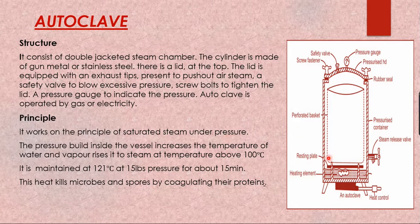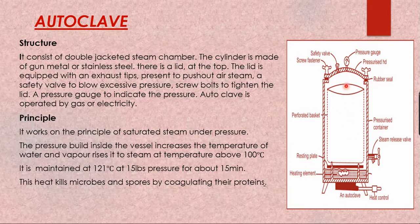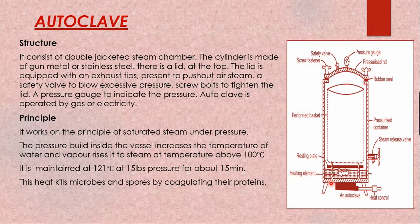In the working mechanism, once switched on, water is boiled and steam raises, creating pressure. The pressure built inside the vessel increases the temperature of water and vaporizes it into steam above 100°C. The autoclave is maintained at 121°C at 15 lb pressure for about 15 minutes. When the pressure gauge reads 15 lb pressure, that indicates the temperature inside is 121°C, and from that point you note the time for 15 to 20 minutes.